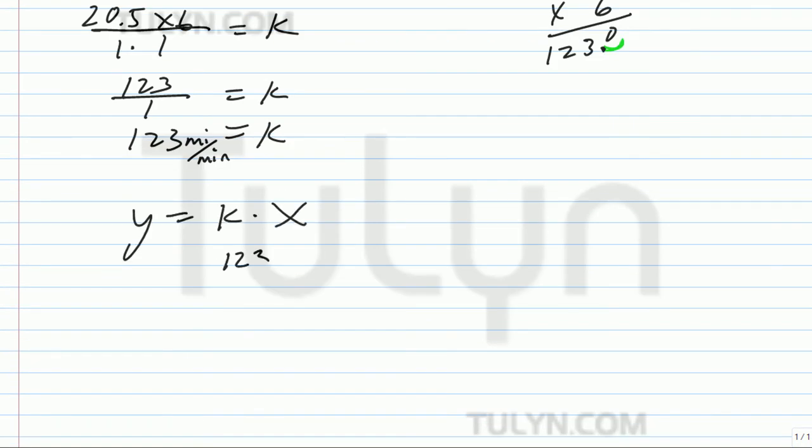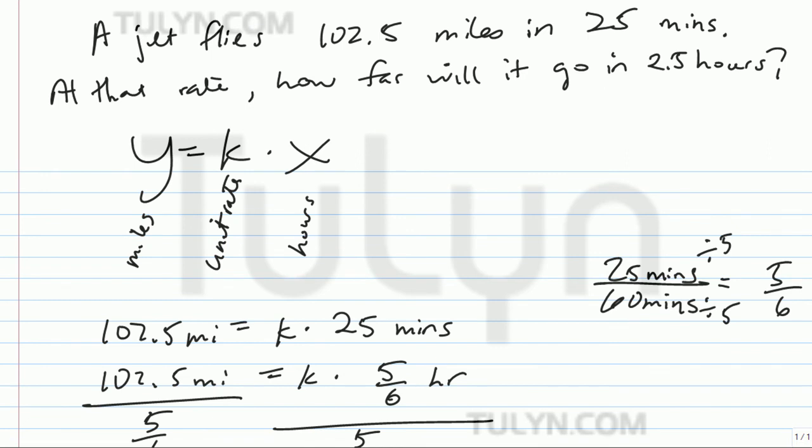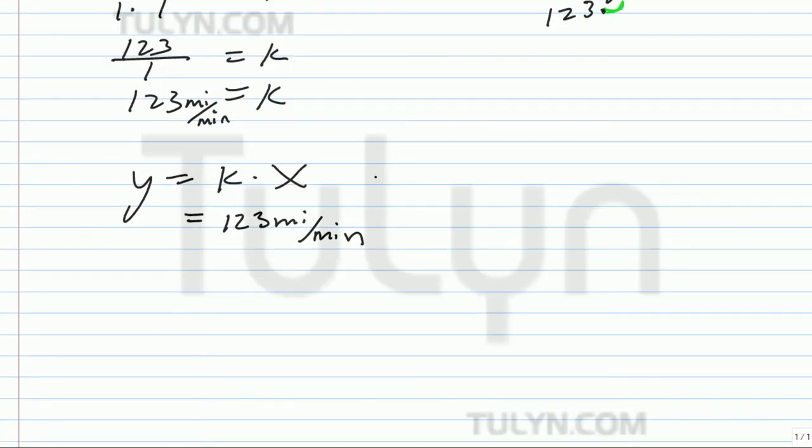I'm going to plug in 123 miles per minute for k. And we need to figure out how far. That's the distance. And they give you time of 2.5 hours. So times 2.5 hours. We don't know what the distance is, but that'd be y. So y equals 123 times 2.5. So go ahead and figure that out on the side. 123 times 2.5.